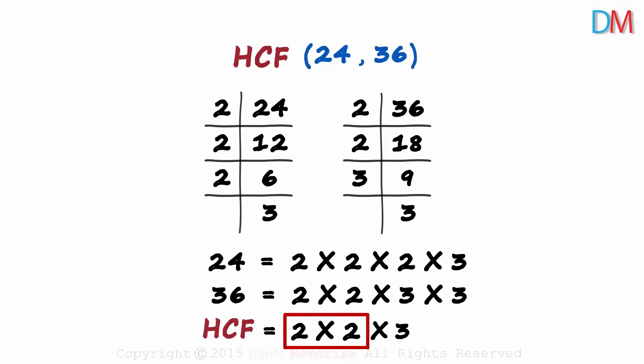2 times 2 is 4, and 4 times 3 is 12. The highest common factor of 24 and 36 is 12.